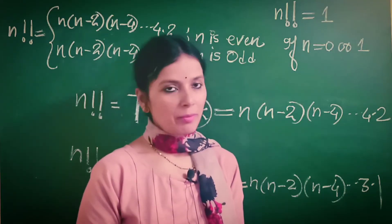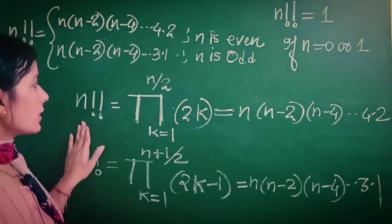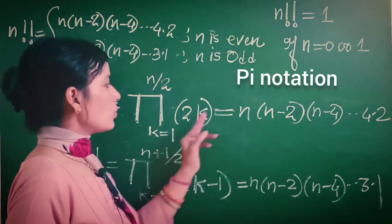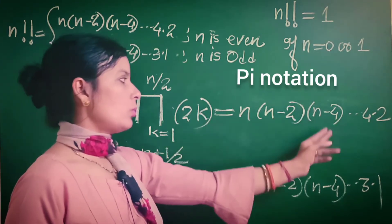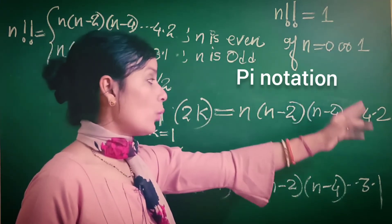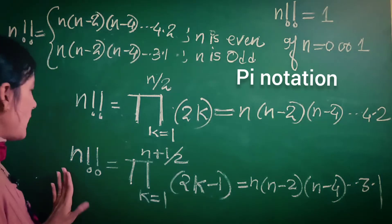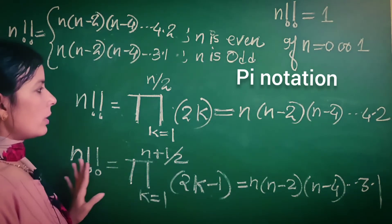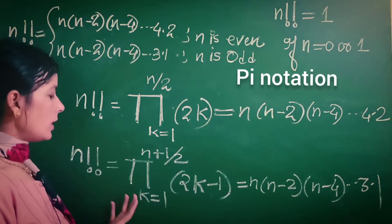If you want to define double factorial in sigma notation: for even n, n!! equals the product where k goes from 1 to n/2 of 2k, which gives n × (n−2) × (n−4) × ... × 2. For odd n, n!! equals the product down to 3 × 1.